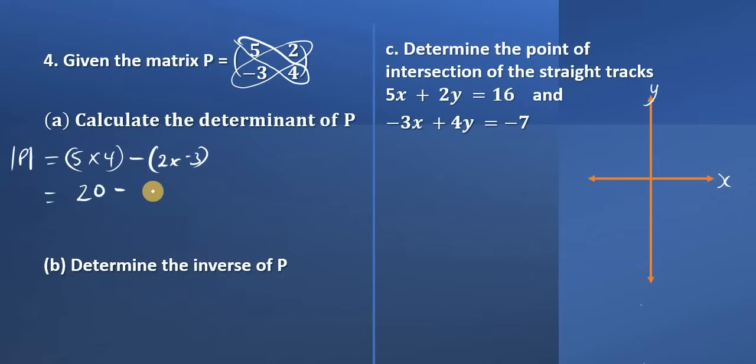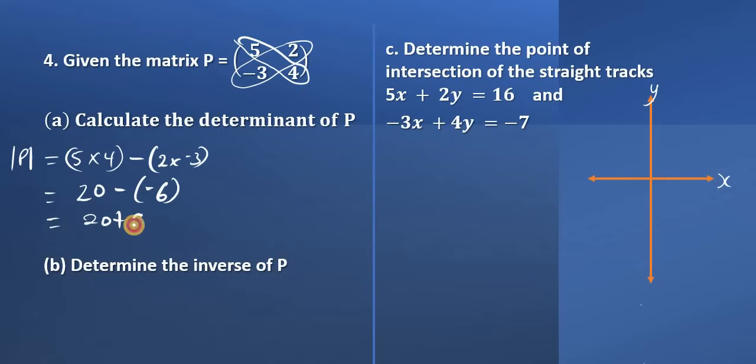Of course we subtract them, so we get 20 minus negative 6. And subtracting the negative makes it positive, so we have 20 plus 6, which gives us 26.